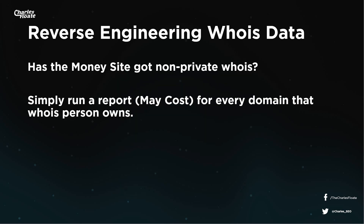Reverse engineering WHOIS data — this one is obviously extremely hit and miss. If you go to the money site and the WHOIS information is available, rather than the person having bought a WHOIS privacy guard, then you'll be able to run a report — many do cost money — to check every domain associated with that person or persona. I've done this before and found quite a few PBNs, because a lot of TLDs such as .de and .co.uk don't allow WHOIS protection, so you have to put up your actual WHOIS details, and many people don't change their registration accounts when registering domains.